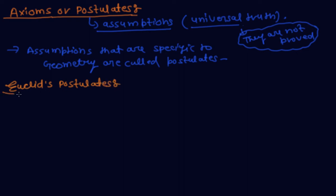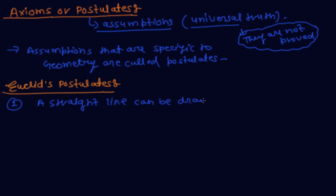Euclid's assumptions are specific to geometry. The first postulate is: a straight line can be drawn from any point to any point.